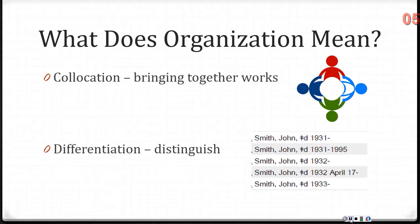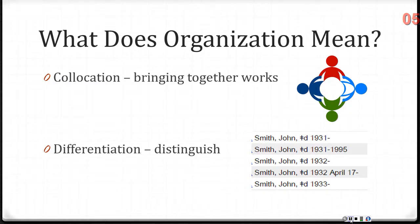The other idea we bring to the organization of materials is differentiation. Co-location means to bring things together; differentiation means to distinguish. We want to be able to distinguish between names, titles, and subject terms that are the same. There's an example on the screen of the name John Smith, a very common name. Libraries have a way of distinguishing one John Smith from another, so that when you're looking for a resource by a photographer named John Smith, you don't have to wade through all the resources by an author named John Smith who writes action and adventure stories.